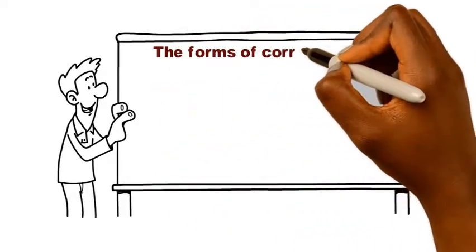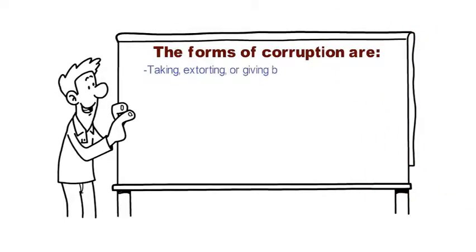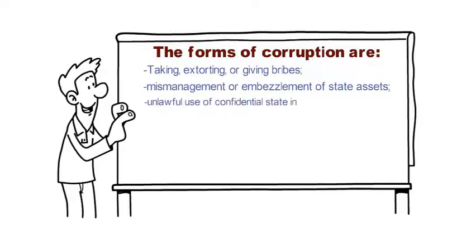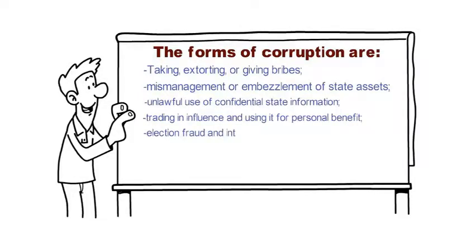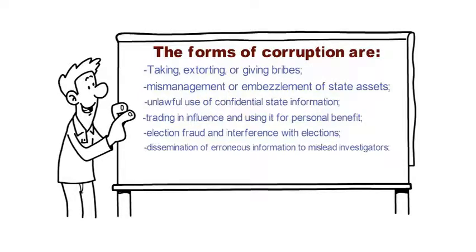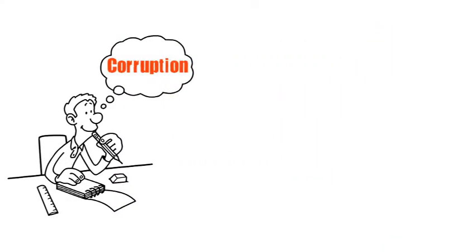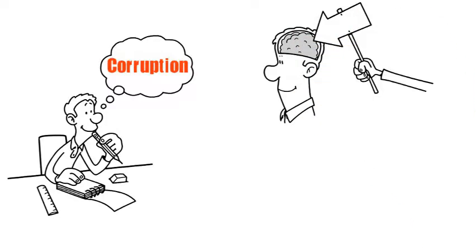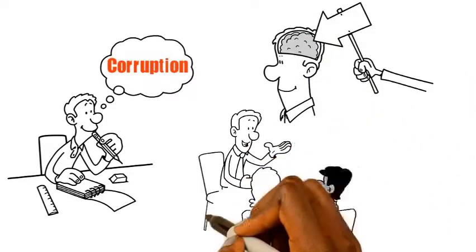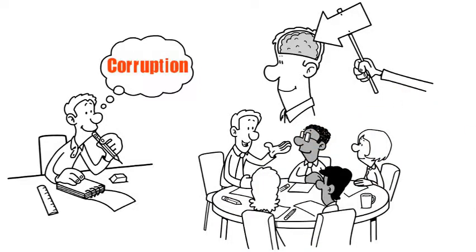We have also seen the forms of corruption. The forms of corruption are: taking, extorting or giving bribes; mismanagement or embezzlement of state assets; unlawful use of confidential state information; trading in influence and using it for personal benefit; election fraud and interference with elections; dissemination of erroneous information to mislead investigators; illicit enrichment; and damage to the public service. Now analyze the following scenarios and answer the questions that follow. You can discuss your answers with your peers, your tutor or any other interested person.